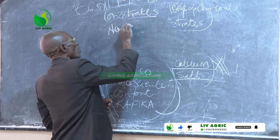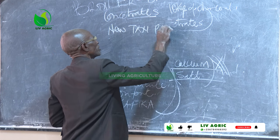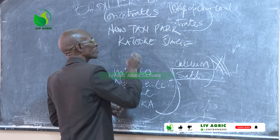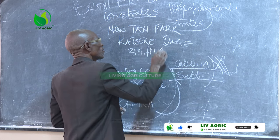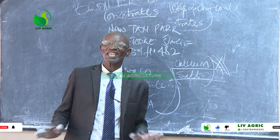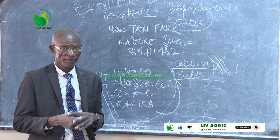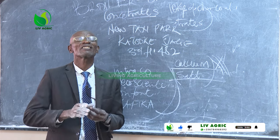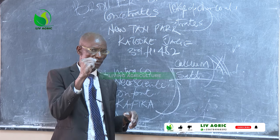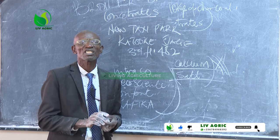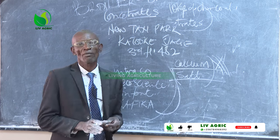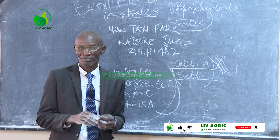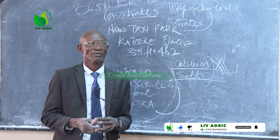We are located at Newtats Park, Katoke Stage, third floor, room number 482. For any consultation, come to the office. If you want us to visit your farm or site, we charge 500,000 Uganda shillings within Uganda, and transport is excluded on top of that.